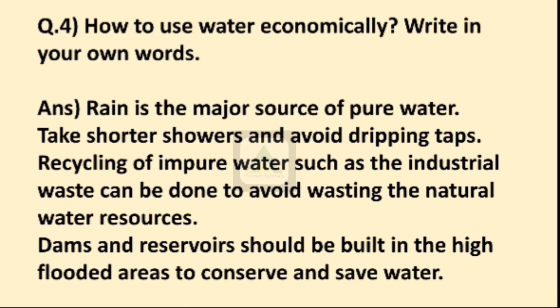Question number 4: How to use water economically? Write in your own words. Rain is the major source of pure water, so we should use rainwater — rain water harvesting. Take shorter showers and avoid dripping taps; use only as much water as needed and stop taps from dripping. Recycling of impure water such as industrial waste can be done to avoid wasting natural water resources. Dams and reservoirs should be built in high-flood areas to conserve and save water.